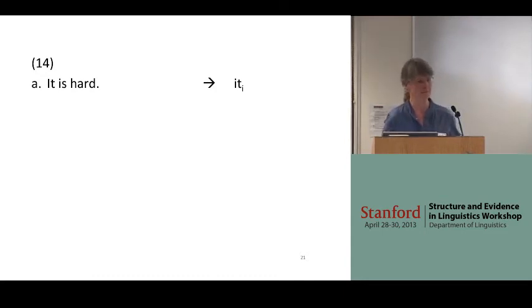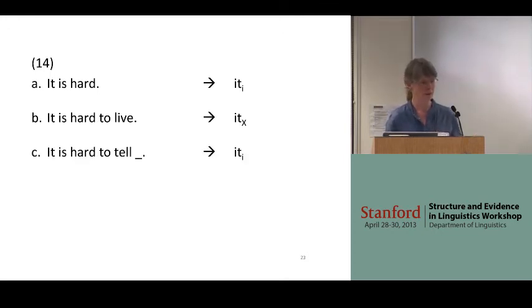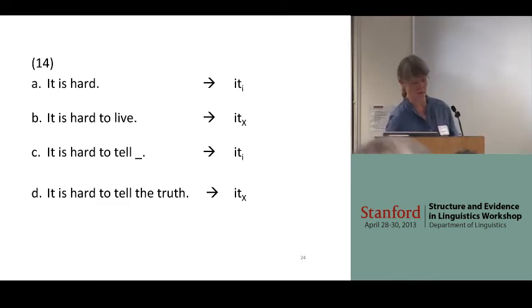So, starting off with this example: 'It is hard.' The 'it' here has to be an anaphoric referential pronoun. 'It is hard to live'—an expletive. 'It is hard to tell'—again, it has to be referential because of the gap. 'It is hard to tell the truth'—switches back to an expletive. But of course, the processor doesn't know at the point when it's processing the 'it,' etc., whether there will be a gap in the subsequent infinitival clause.